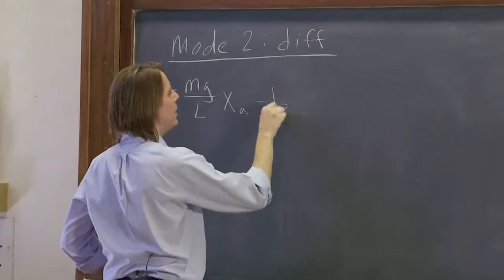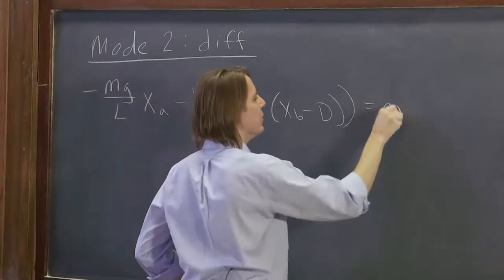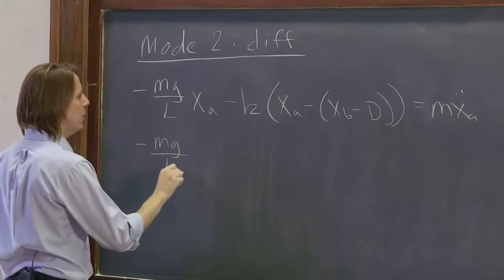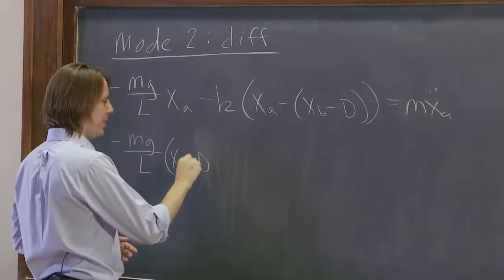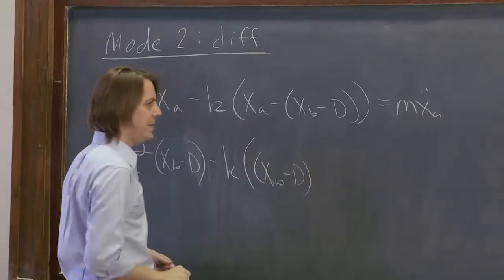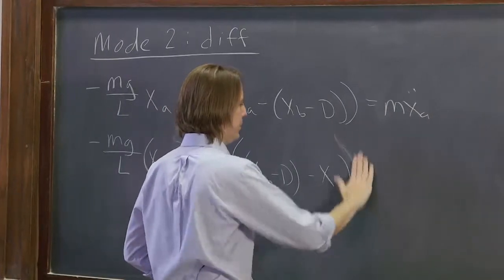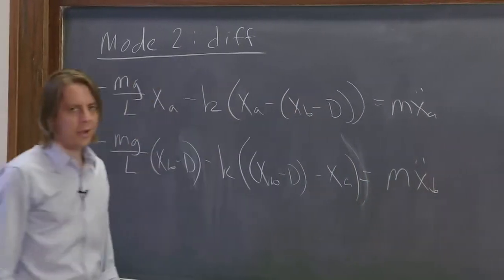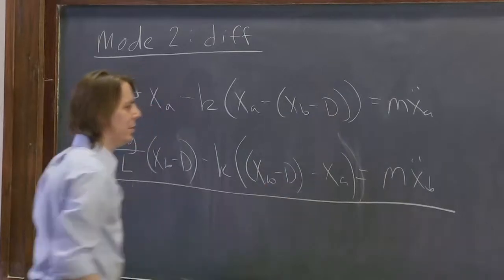mg over L times xA minus k times (xA minus (xB minus D)) equals m times xA double dot. And minus mg over L times (xB minus D) minus k times ((xB minus D) minus xA) equals m times xB double dot. Now we're going to subtract them like we're in grade school, because if this equals this and that equals that, then this minus this has to equal that minus that.